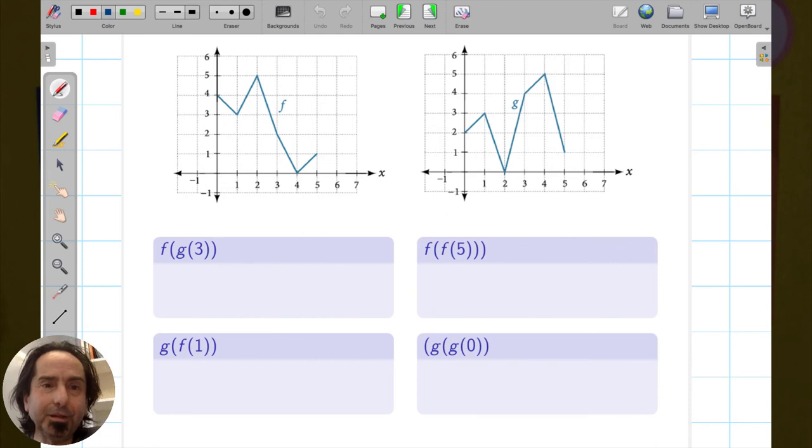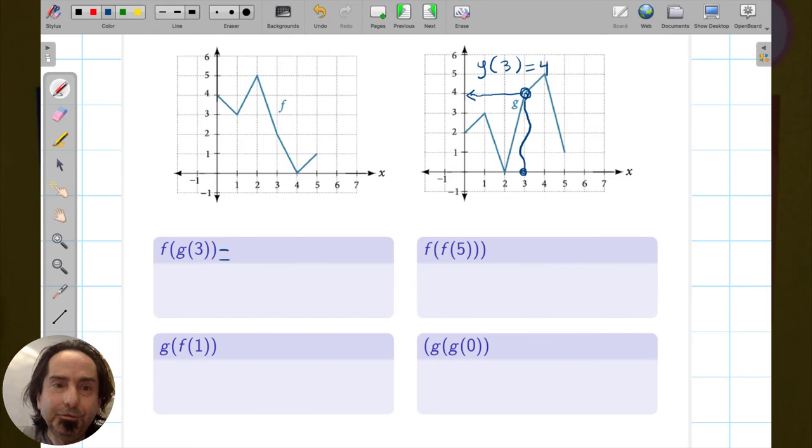So quick practice. Here are two functions given as graphs. And we want f(g(3)). So I want g(3). The input is 3. So I'll go up to the point on the curve. And the output is 4. So that means that g(3) = 4. So f(g(3)) = f(4). And now I have to go to the f graph. The input is 4. And there's the point. This is the point (4, 0). So the output is 0. And there's the answer for f(g(3)).